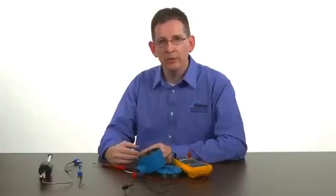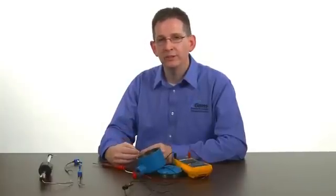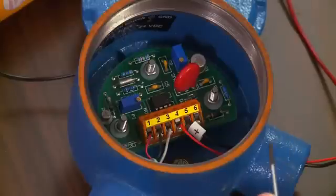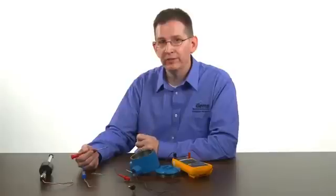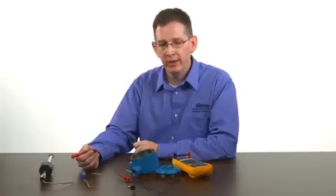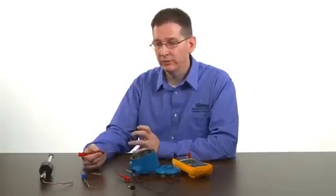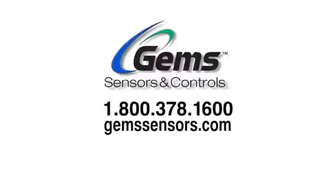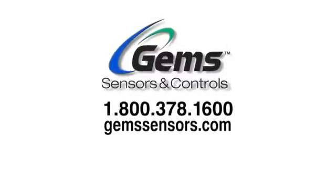Once you've completed the calibration process, the signal conditioner is ready to be used on transmitters of any length. Should you have any questions on this calibration procedure or any technical questions on any GEMS product line, feel free to give us a call at 1-800-378-1600. Thank you.